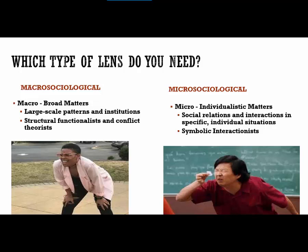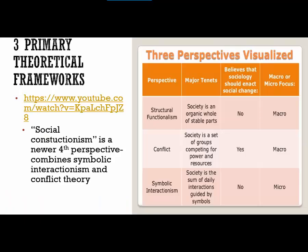Micro sociological is when you're looking at smaller, more individualistic matters — individual situations, small groups, social relations and interactions. This is a much more narrow focus. Symbolic interactionism is our only micro sociological framework that we'll discuss in detail in this class. These three primary theoretical frameworks are covered by a cartoon overview video I provided in the module.